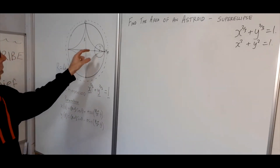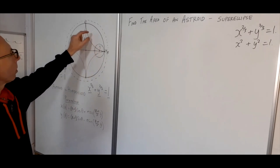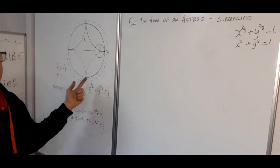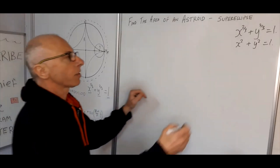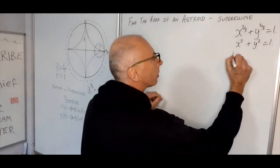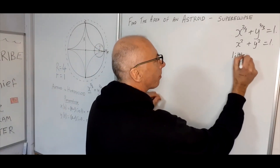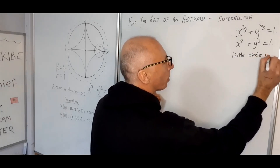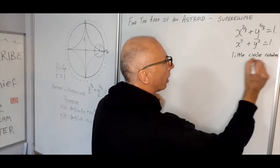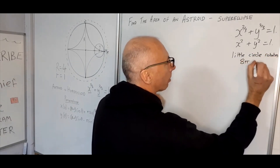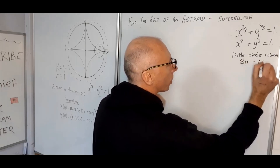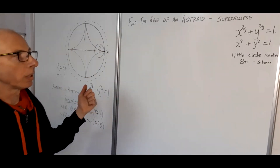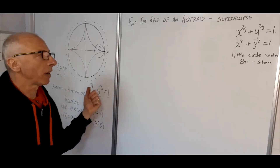When we're rotating this small circle, it will rotate through 8π — basically four full turns. That's going to be important when we come to determine the parametric variable 'a'.